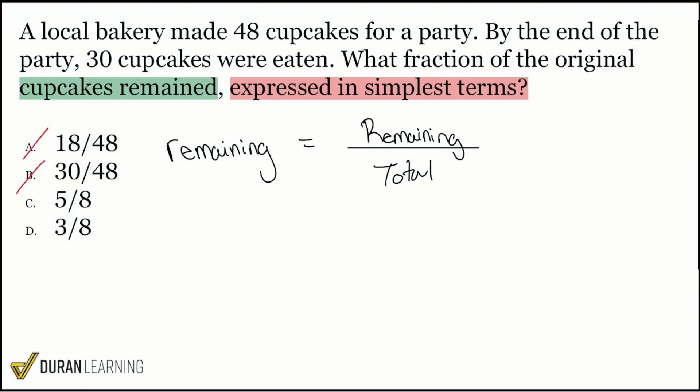Everybody, what was the total? That's the easier part. How many cupcakes were made for the party? Yeah, 48 were made for the party. So that's the easy part. That is the easy part for sure. 48. Cool.